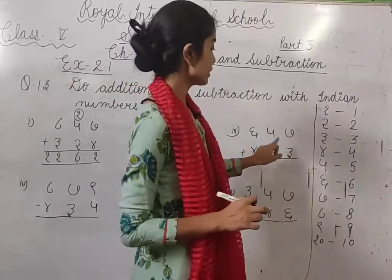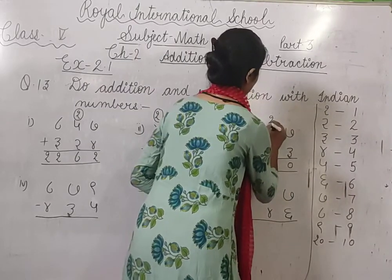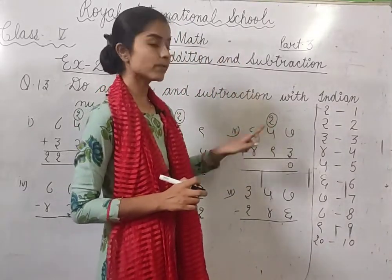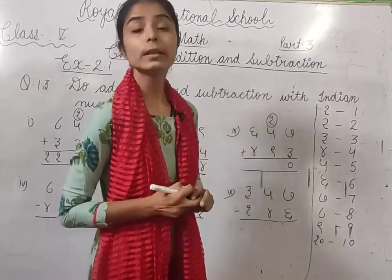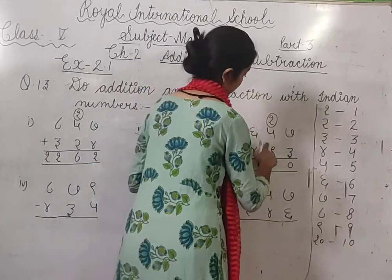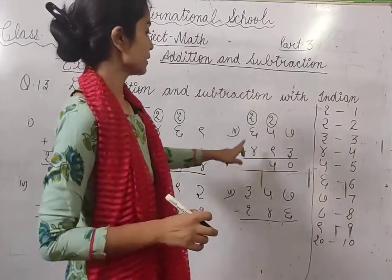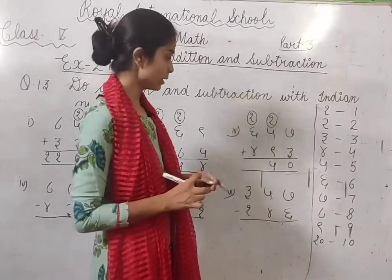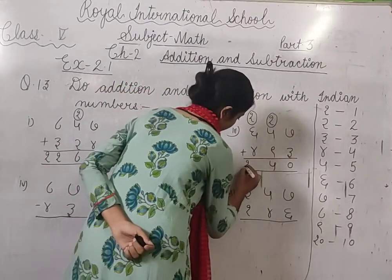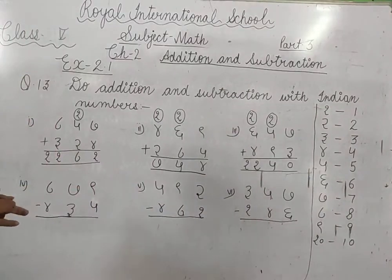Then next, again addition. 7 plus 3 is 10. 0 and then 1 carry, 4 likhenge. Then 1 plus 5 it is 5, 5 plus 1 is 6, 6 plus 9 is 15. Addition aur subtraction mein aapko problem nahi honi chahiye baccha. 6 plus 9 is 15. 5, 1 carry forwarded. Then 6 it is 6, 6 plus 1 is 7, 7 plus 4 this is 4, 7 plus 4 is 11.